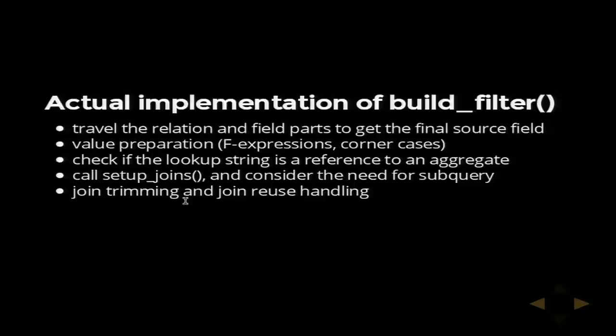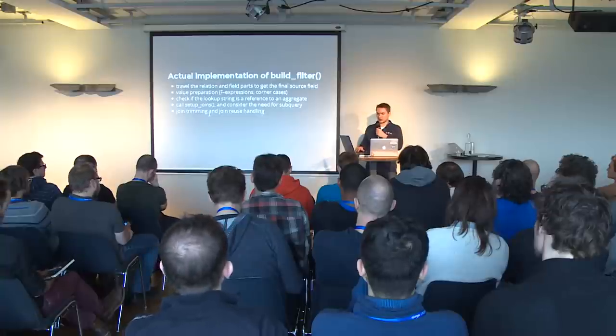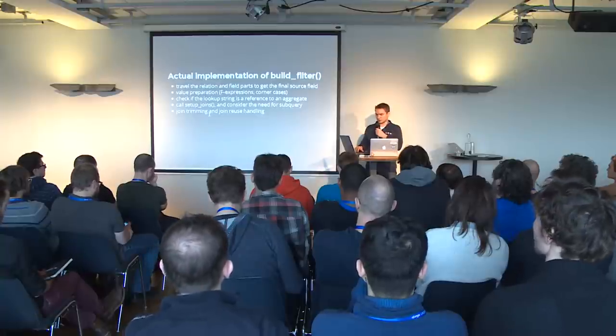We also have to check if the lookup is against an aggregate. Then the next thing is we call `setup_joins`, which fetches the actual source field by checking the model meta, fetching fields, fetching relations, generating the joins. There are also some cases where we need a subquery — when you do an exclude against a multi-valued relation, the ORM has to do a subquery. Then there's join trimming and join reuse handling. Join trimming is easy — if you have a join where the value is already on the left-hand side, you can remove the join.